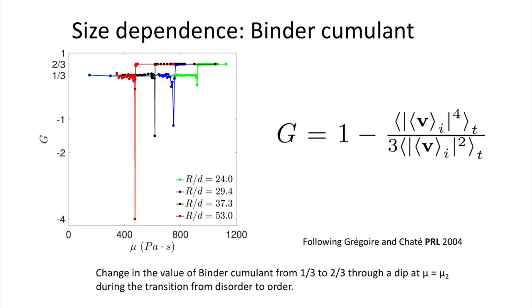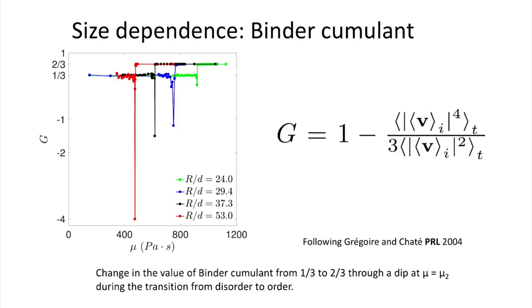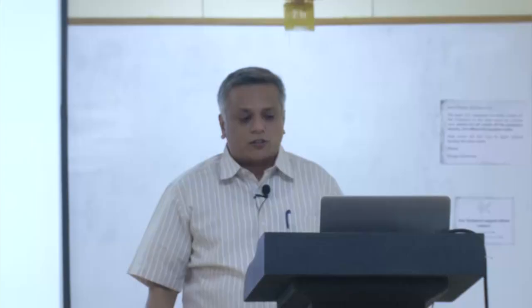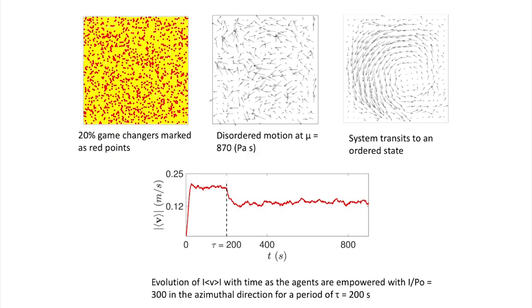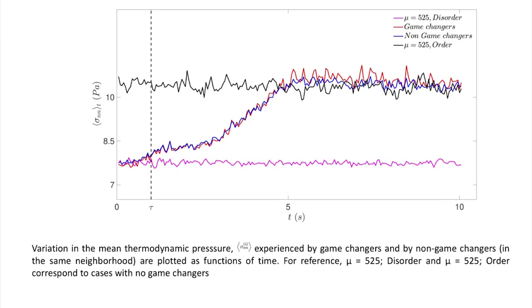To confirm this is indeed a first-order phase transition, we calculated the Binder cumulant from the order parameter and observe a sharp dip just prior to the transition, then settling from two-thirds to one-third. The magnitude of this dip increases with domain size, which is also a feature of a first-order phase transition related to finite-size effects. We also verified the physics is not an artifact of a circular domain by looking at periodic domains and rectangular enclosures, which still give the same vortical state — the magnitudes may change but the physics is the same.